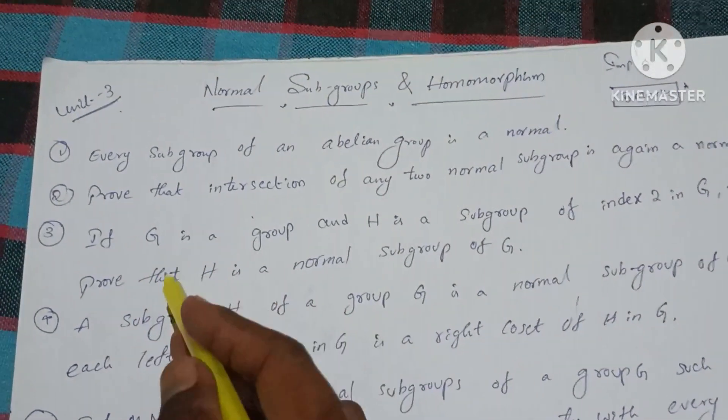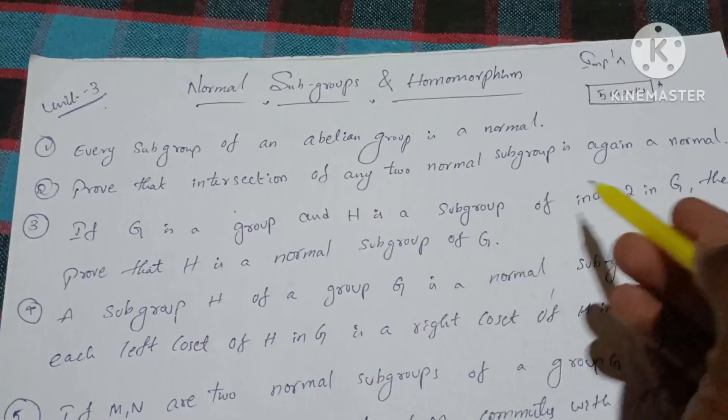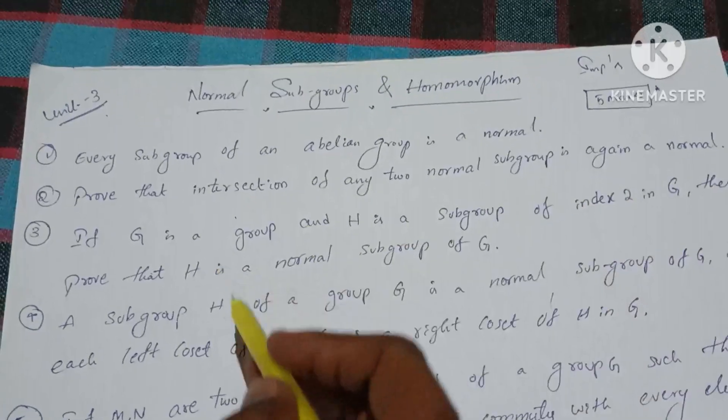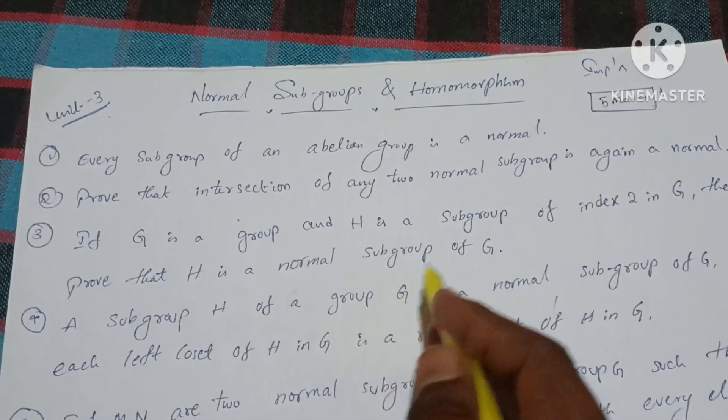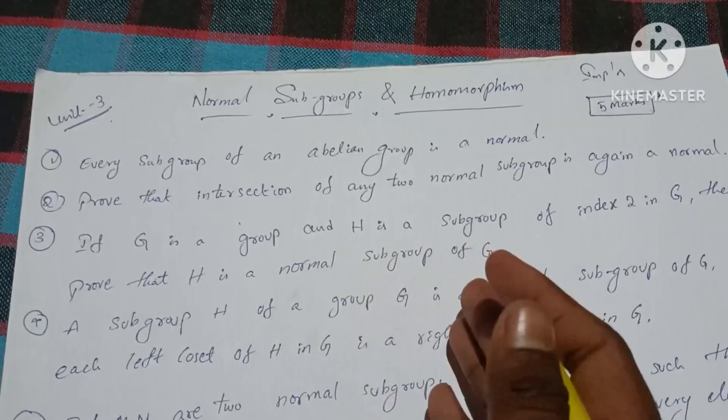Third question: If G is a group and H is a subgroup of index 2 in G, then prove that H is a normal subgroup of G.